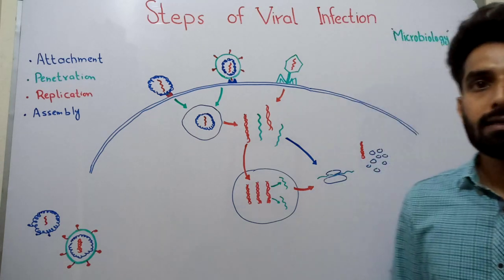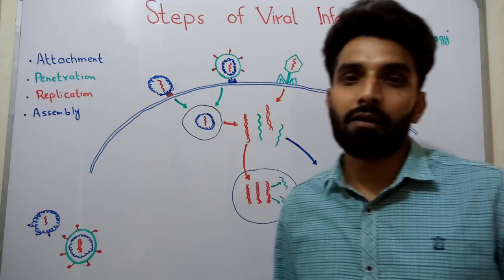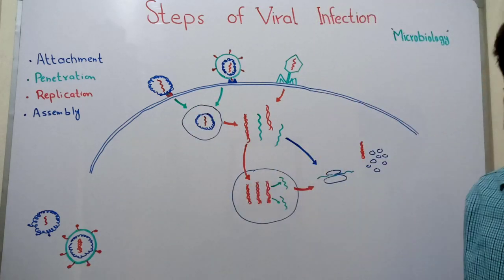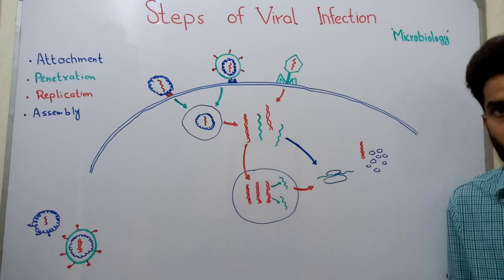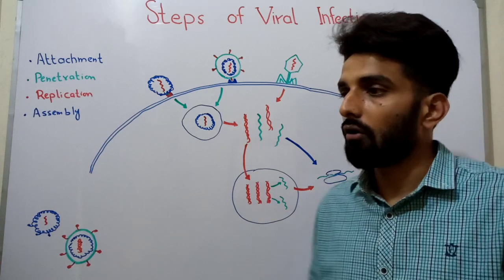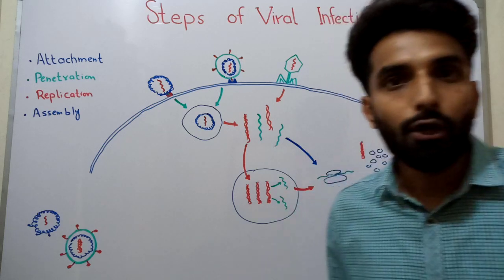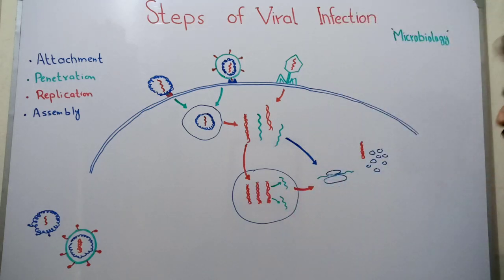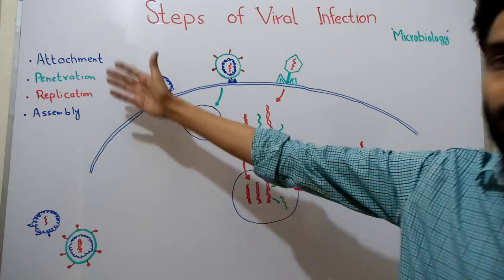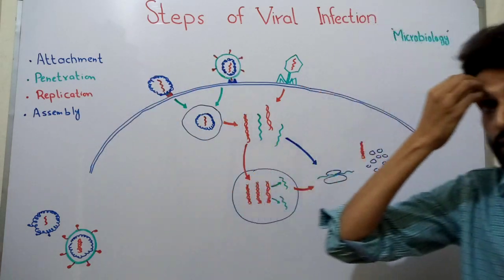Hello friends, welcome back. Let's talk about another very important and interesting topic: the steps involved in viral infection — how a virus infects a host cell, how it enters, and how it replicates and makes new copies. There are basically four steps: attachment, penetration, replication, and assembly.